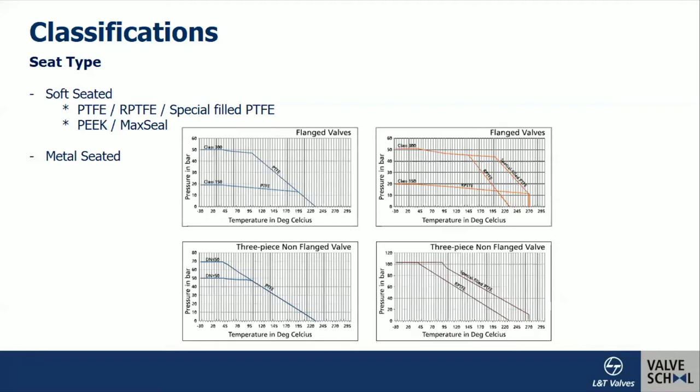Another variant is reinforced PTFE — glass-filled PTFE — which can withstand higher temperatures up to 230°C. There is also a special filled PTFE that can go up to 270°C. These three are commonly used soft seats. For higher pressure classes like Class 900 or Class 1500, a material called PEEK can be used. Max Seal is a trade name for a special filled PTFE that can be used for high-temperature applications up to 275°C.